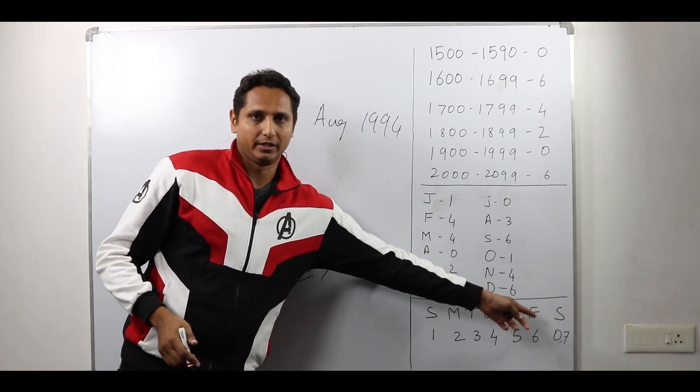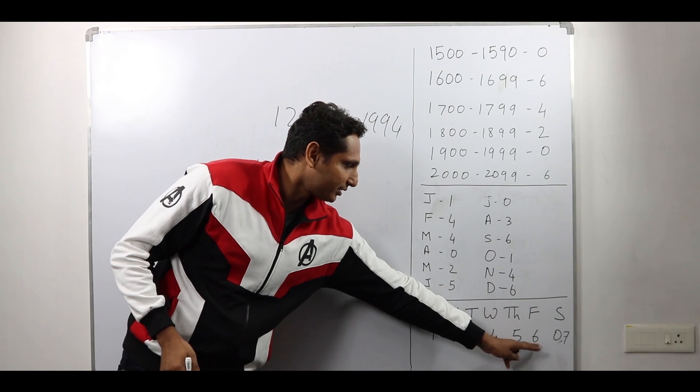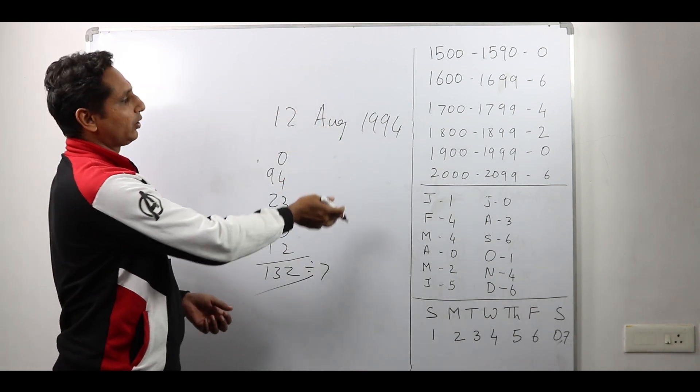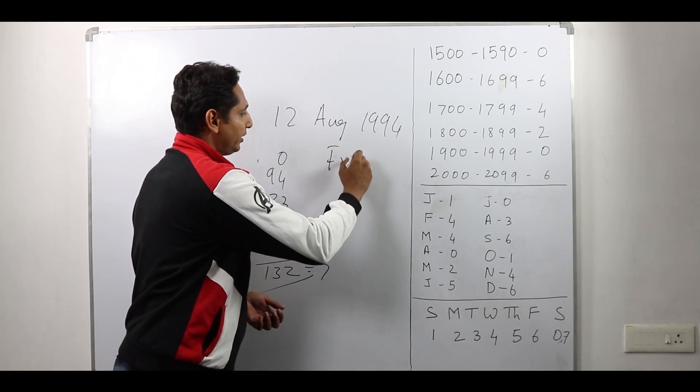Now what is the code? What is the day for 6? It is Friday. So 12th August 1994 was a Friday.